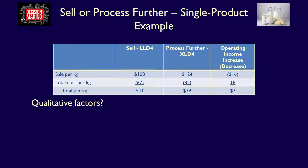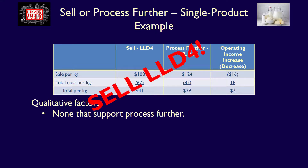Management would now consider qualitative factors, which is step four in the incremental analysis. No additional information was provided in this question, making this difficult. It's hard to think of any qualitative factors that would support processing further into XLD4 when it causes a $2 per kilogram loss in operating income. Given both quantitative and qualitative analysis, management should recommend the company sell LLD4 as is — this is step five in the incremental analysis process.